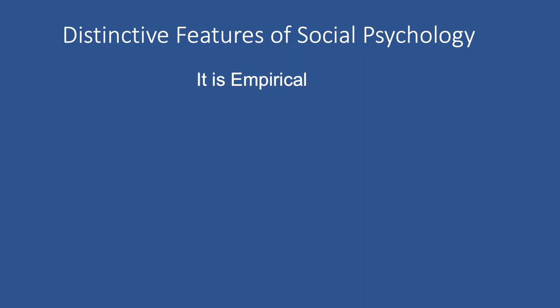First of all, it's empirical. Social psychologists depend on data — we like to collect information and observations, especially things we can put numbers on and quantify. A philosopher may be interested in some of the very same questions as a social psychologist, but the social psychologist is going to depend on empirical data in a way the philosopher probably is not. Secondly, social psychology is not entirely experimental, but it's primarily experimental. We like to put people in situations where we manipulate variables to see what effect those variables will have. This makes psychology different from fields like anthropology and sociology, where most data gathered is observational, based on real-world contexts rather than manipulating things in the laboratory.